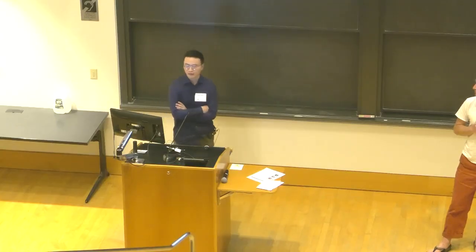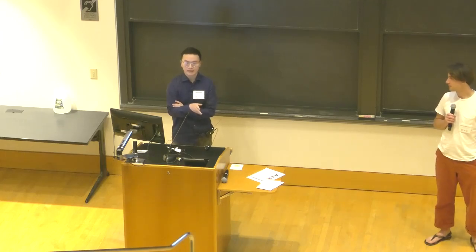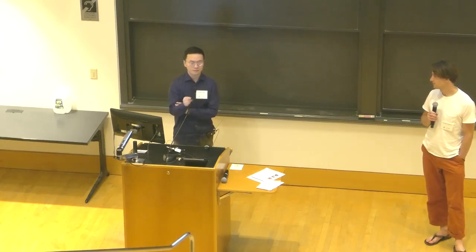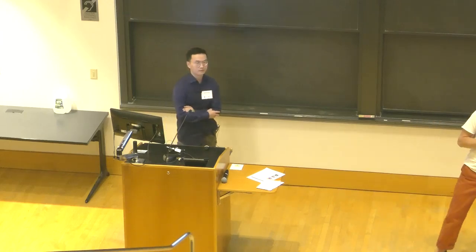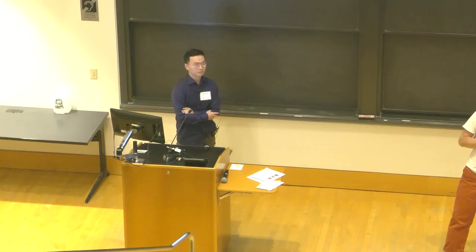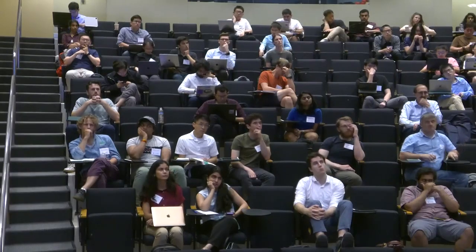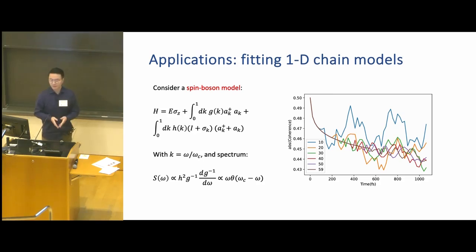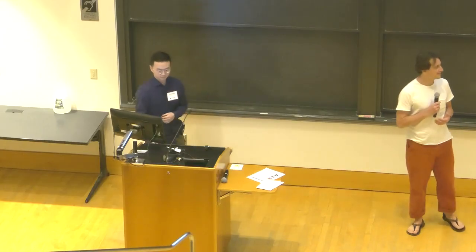Another question asked about the regime where the method works well. Currently there is no precise answer on the exact boundary, but experiments show it works well in a certain region — determining the boundary is future work. A further question asked about applicability to spin-boson models with quantum noise. Surprisingly, the method can be applied there too: in cases where even a quantum bath has Gaussian noise, the random pulse sequence technique still applies.